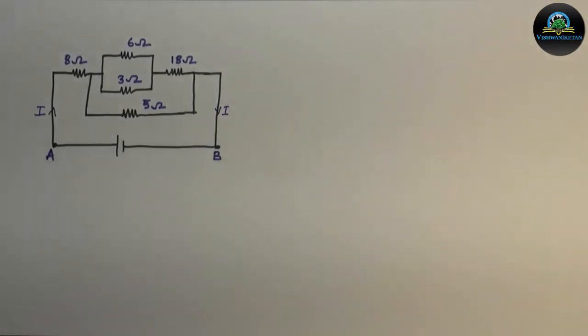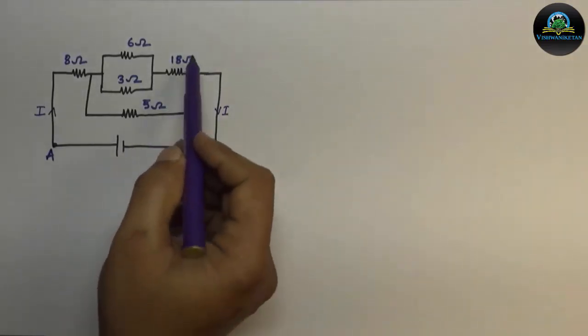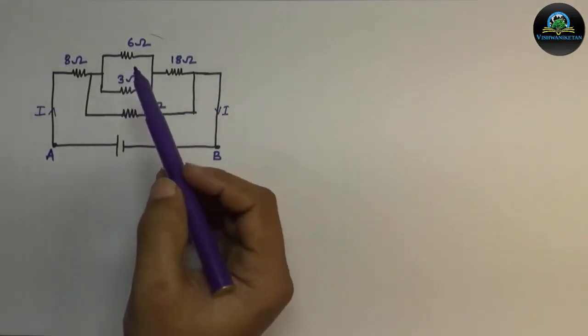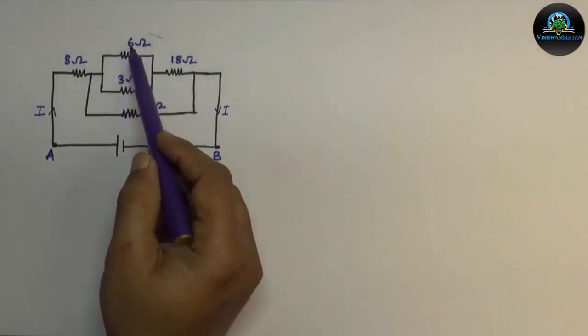Calculation of effective or equivalent resistance means the conversion of a given combination of resistances into a single resistance across A and B. That is, our aim is to find out or convert this combination of resistances into a single resistance between A and B. Now the first step: by observing the diagram we can show that the 6 ohm resistor and 3 ohm resistor are connected in parallel.